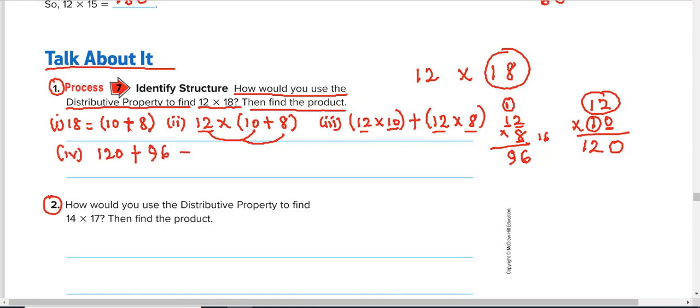So, which gives, align the numbers properly for you to know how to get it correctly. So 120 plus 96. 0 plus 6 is 6. 2 plus 9 is 11. Write 1, take 1 up. 1 plus 1 is 2. Final answer, 216. So these are the steps involved. And that is what is required of you to find the product.